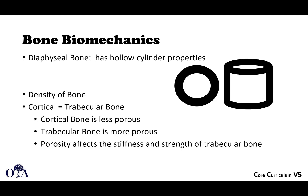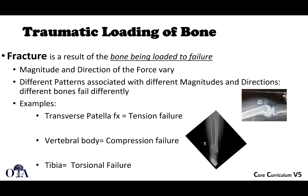Diaphyseal bone is a hollow cylinder and has those properties. Cortical bone is less porous than trabecular bone, and porosity affects the stiffness and strength of trabecular bone. A fracture essentially is a result of a bone being loaded to failure. The magnitude and direction of the force can vary, and different patterns are associated with different magnitudes and directions. Different bones are going to fail differently.